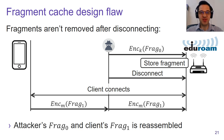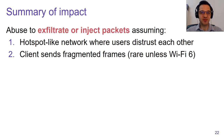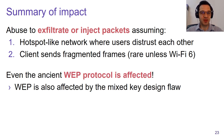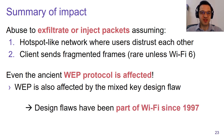In practice, we can abuse this design flaw to either exfiltrate fragments or inject packets, under the condition that we are targeting a hotspot-like network such as enterprise, where users mutually distrust each other, and under the condition that the client sends fragmented frames. Note that it's quite rare for the client to send fragmented frames unless Wi-Fi 6 is used. Interestingly, even the very old WEP protocol is affected by this design flaw. This shows that the discovered design flaws have been part of Wi-Fi since its introduction in 1997.